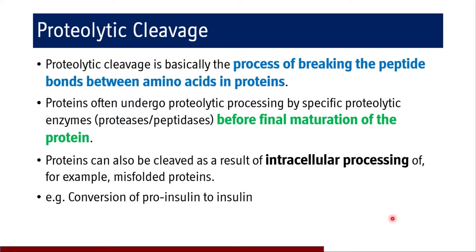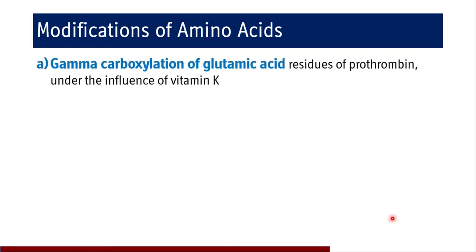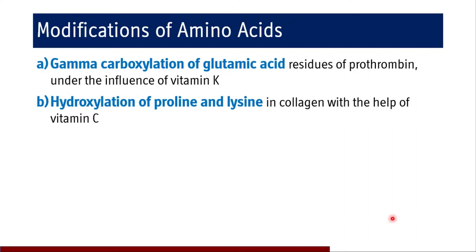The next type of post-translational modification is modification of amino acids. In activation of clotting factors, there is gamma carboxylation of glutamic acid under the influence of vitamin K, and the residues of prothrombin are activated. Then there is hydroxylation of proline and lysine in collagen with the help of vitamin C. This is also an irreversible type.